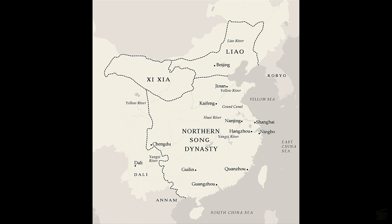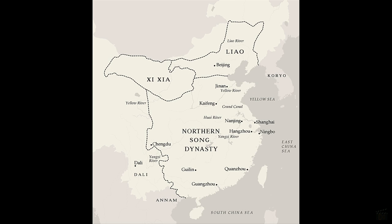Meanwhile the Jurchens, nomadic people who lived beyond the Liao and the Kitans outside of China proper, had rebelled against the Liao. The Song dynasty allied with the Jurchens against what they took to be the common enemy, the Liao. After the Liao was put down, the Jurchens simply moved in and captured Kaifeng, the capital of the north, in 1126. Huizong was taken prisoner and the Northern Song dynasty ended.